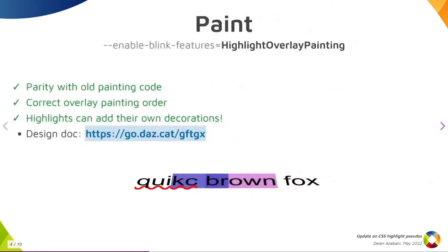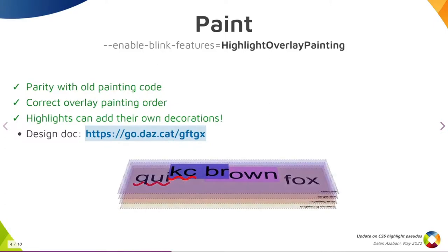In paint, we recently landed the new highlight overlay painter. This is huge because it means we can now paint each piece of text exactly once, leaving the backgrounds and decorations in exactly the right order. Assuming no new regressions crop up, hopefully this will ship in M104.